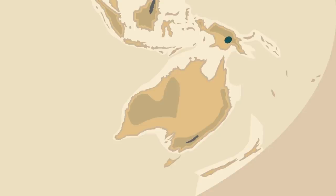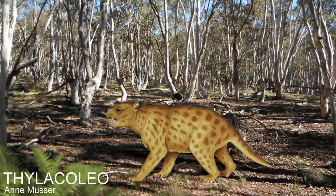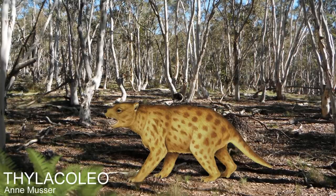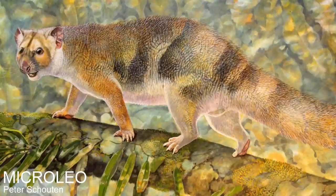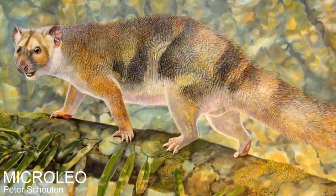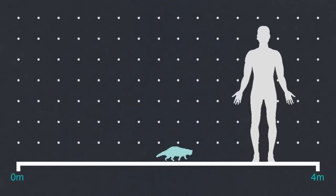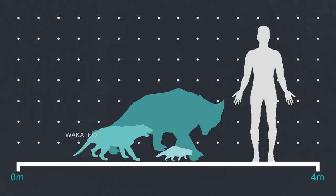However, the marsupial lion was not a member of this group; it belonged to the Diprotodontia, which contains kangaroos and koalas. The earliest thylacoleonid was called Microleo, which lived about 30 million years ago and was about the size of a cat, almost certainly omnivorous. Later thylacoleonids like Wacaleo were also omnivorous, with Thylacoleo eventually becoming completely carnivorous — the species Thylacoleo carnifex being the largest, weighing as much as a lioness.